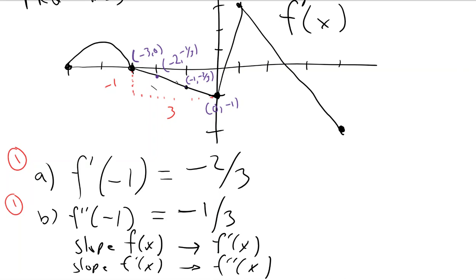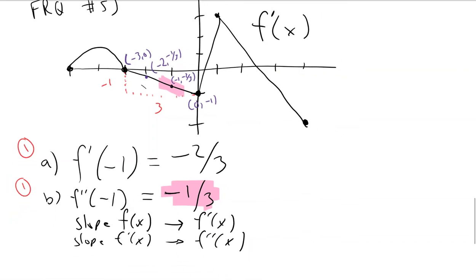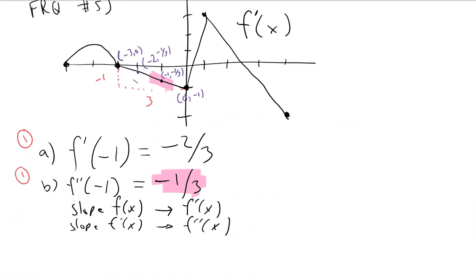So at negative 1, right here, it has a slope of negative 1 third. It's really just understanding the question at that point, because y'all can find slope. That's very, very, very common. Okay, you guys okay with part B now? If you missed that one?